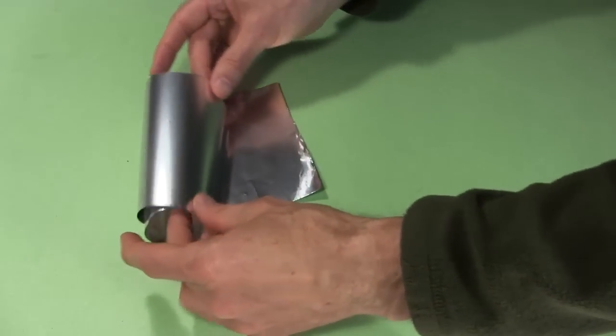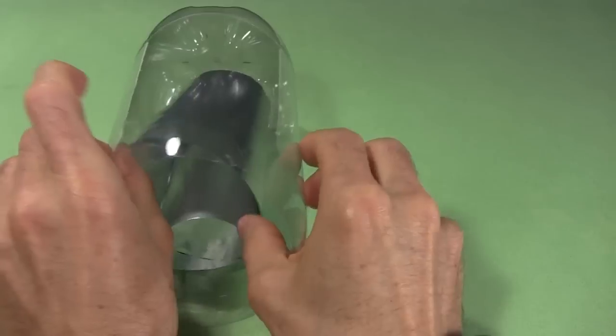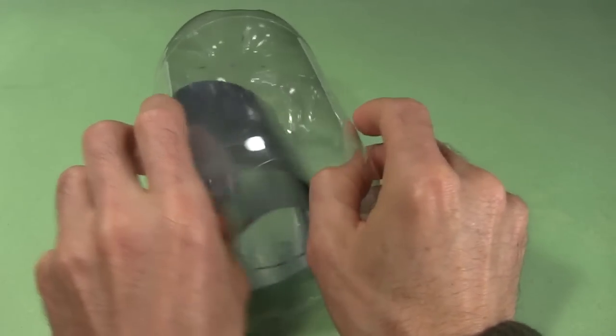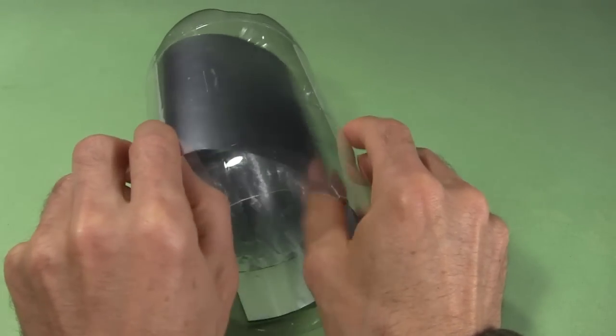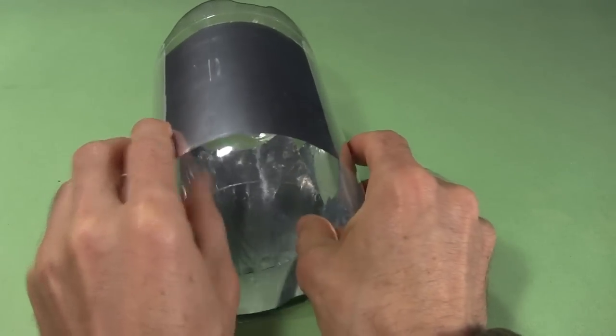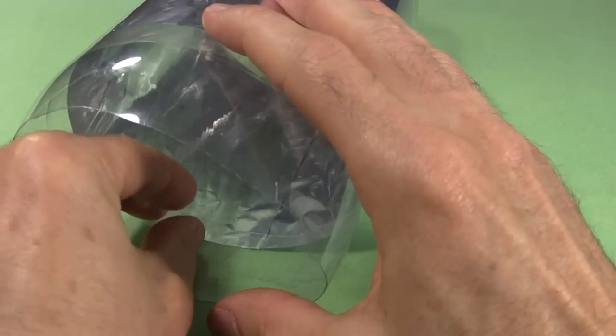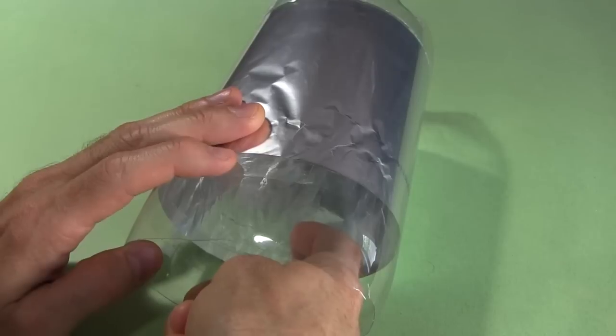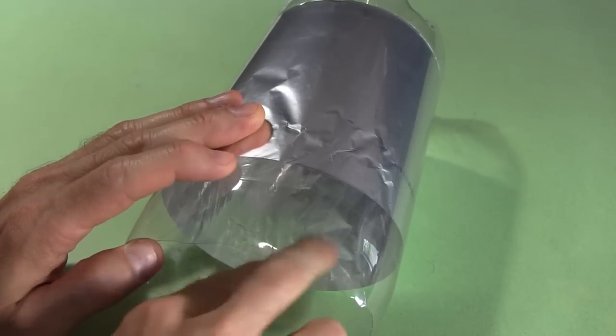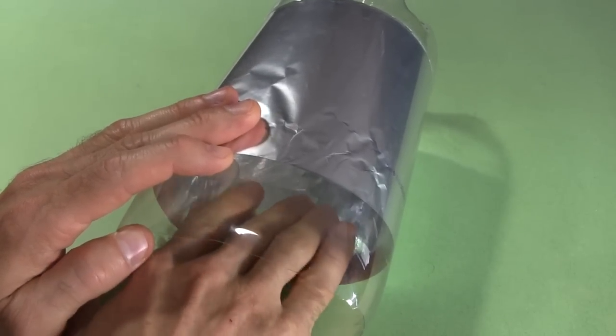Roll one of them into a cylinder and lower it into the bottle. Arrange it so that it's pressed against the sides all over, avoiding any loose areas since that'll result in a lower capacitance. Tape the top edge with overlapping pieces of tape. Also tape along the vertical end that you can access. Tape the bottom too if you can reach it.